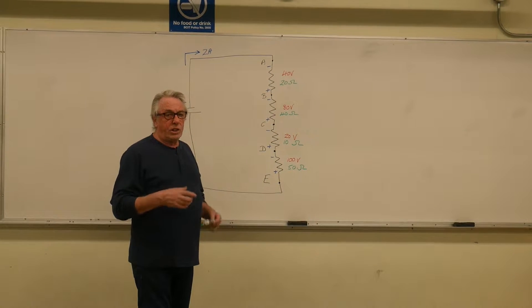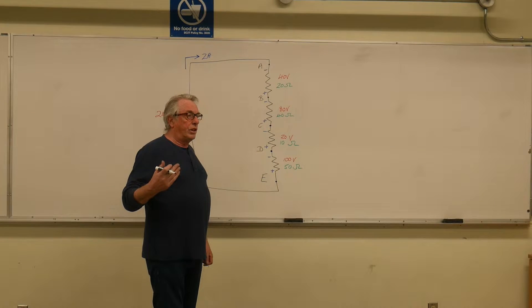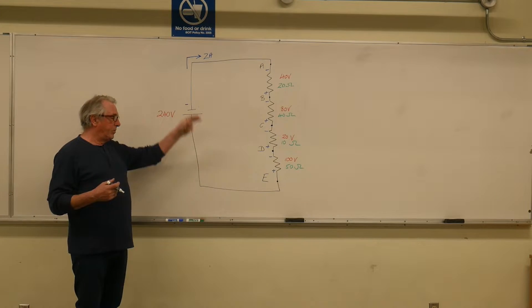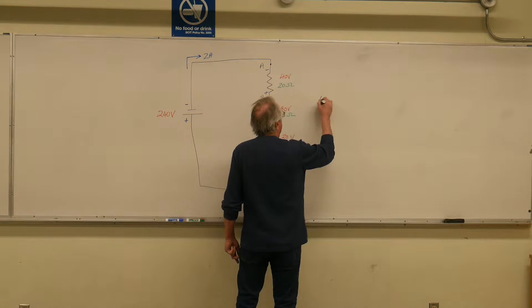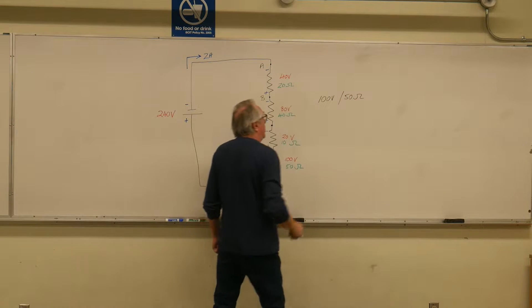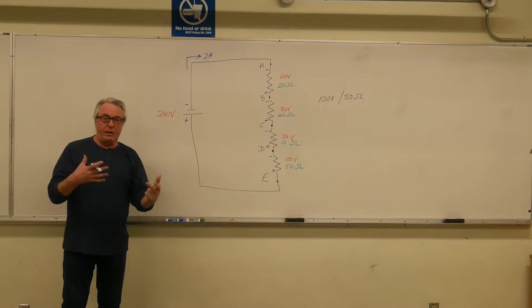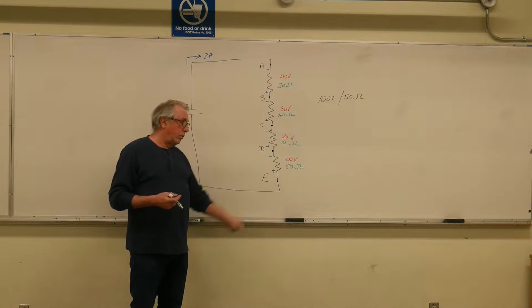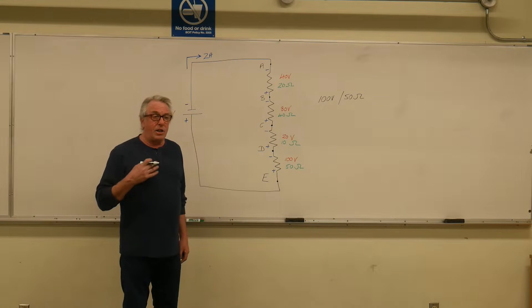So a loaded voltage divider is basically something that we can obtain a different voltage from the source voltage. For instance, here the source voltage is 240 in this circuit, and let's say I had a piece of equipment or a load that was rated at 100 volts and 50 ohms. I'm thinking I would like to find somewhere where I could apply 100 volts to that. I look here I've got 240, but down here I see 100 volts. So if I put something in parallel with a resistor that has 100 volts across it.